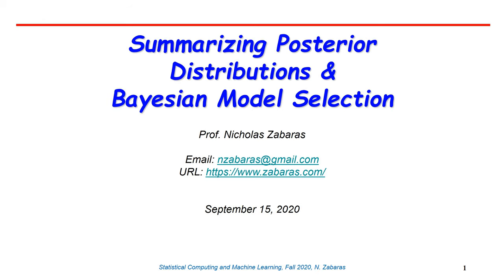Hello everybody, this is Statistical Computing and Machine Learning. Today we will be discussing a few more important elements on summarizing posterior distributions, and in particular different types of point estimates for the parameters, and then hopefully we will have enough time to discuss ideas about Bayesian model selection.